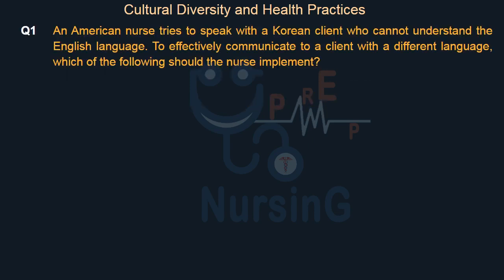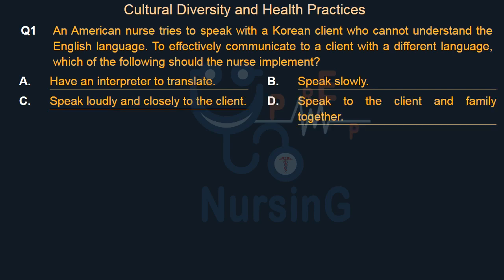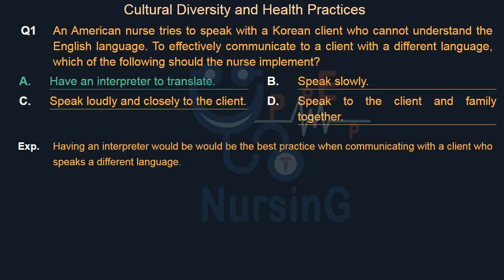An American nurse tries to speak with a Korean client who cannot understand the English language. To effectively communicate with a client who speaks a different language, which of the following should the nurse implement? Option A: Have an interpreter to translate. Option B: Speak slowly. Option C: Speak loudly and closely to the client. Option D: Speak to the client and family together. The right answer is Option A — Have an interpreter to translate. Having an interpreter would be the best practice when communicating with a client who speaks a different language.